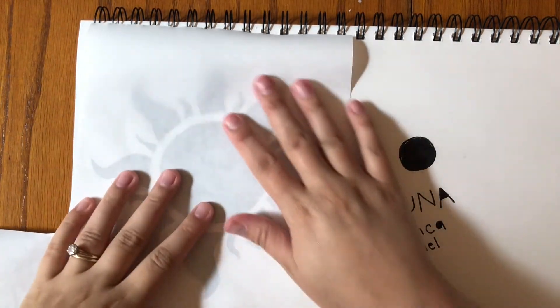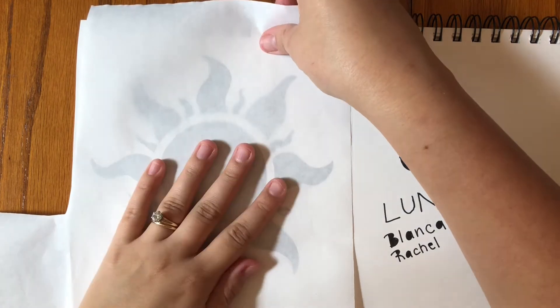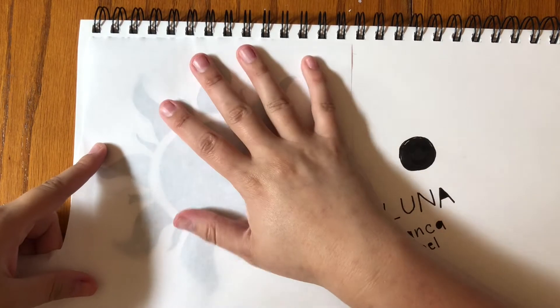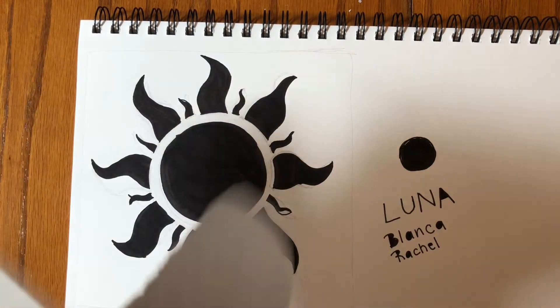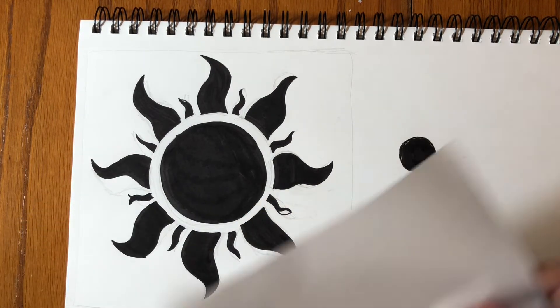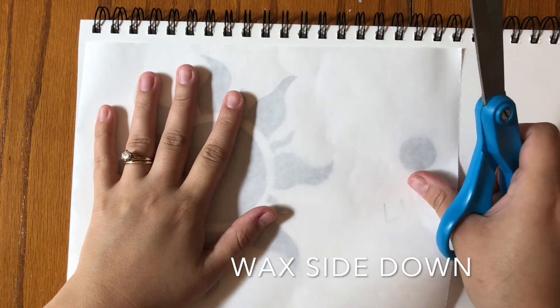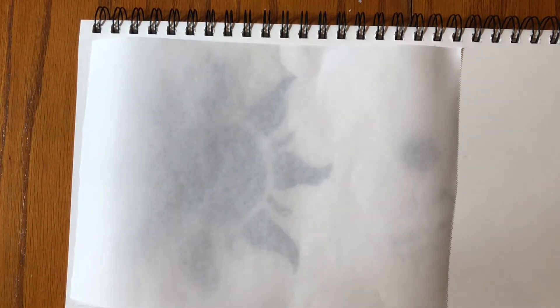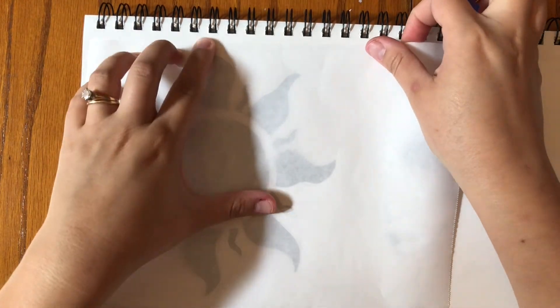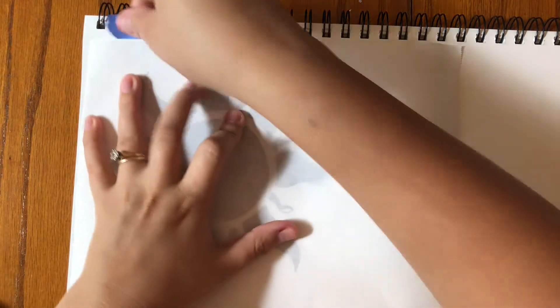Now we're going to transfer it to the wax paper. I've got this piece right here that covers my whole design. I don't want to get too close to the edges. I'm going to trim some of it off. Now I'm going to tape my wax paper to my sketchbook so it doesn't bubble up on me. The wax paper wants to curve because it's lived in a roll its whole life, so we want to lay it flat so we can see our design.